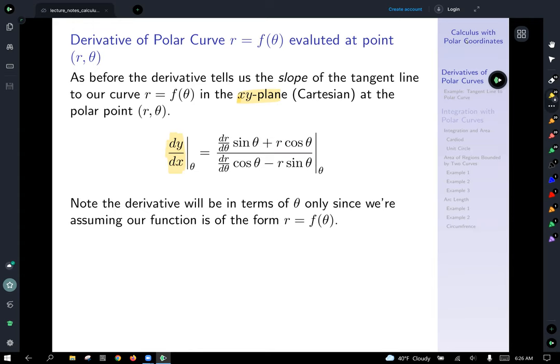So this expression is going to be the derivative. And when we calculate it, it's going to be all in terms of theta. So it makes sense to evaluate this xy plane derivative in terms of theta. We're going to evaluate it at a point, or an angle theta. And that's what this last line says. Note the derivative will be in terms of theta only, since we're assuming our function is in the form of r equals f of theta.